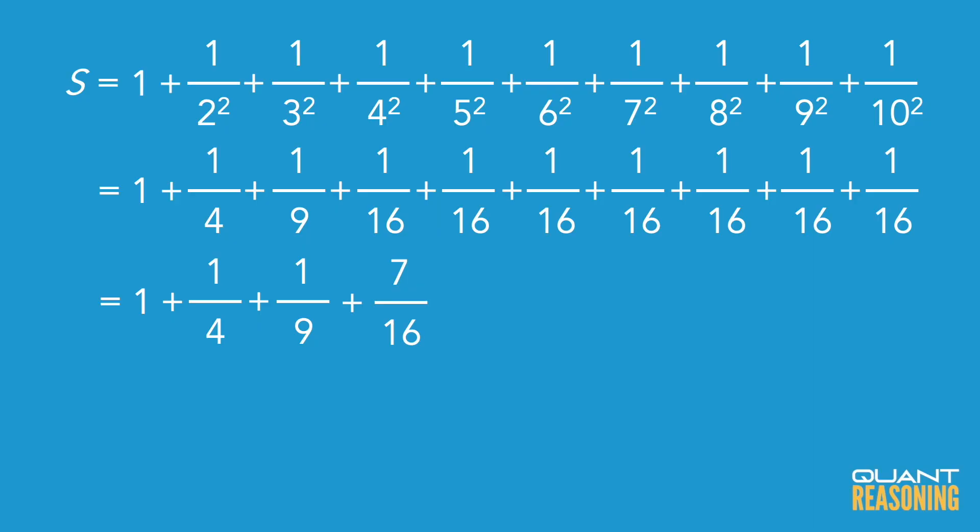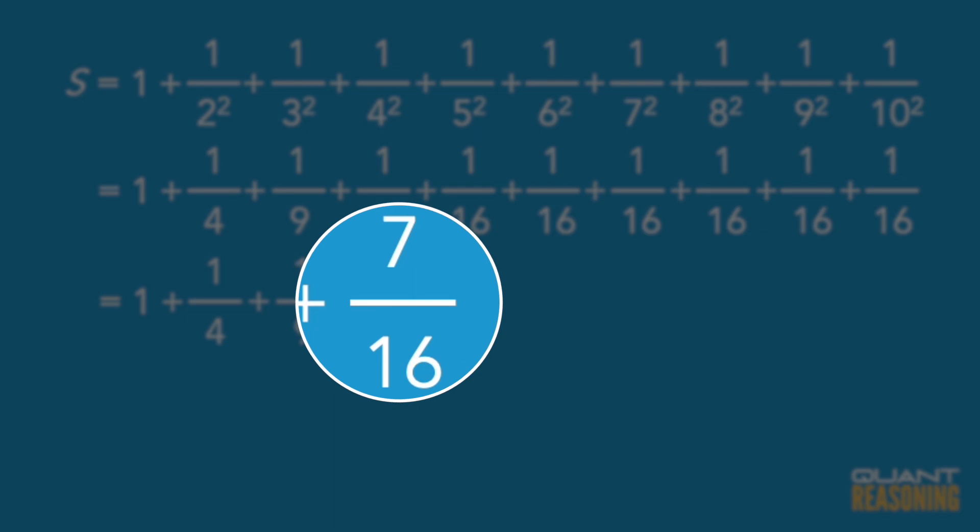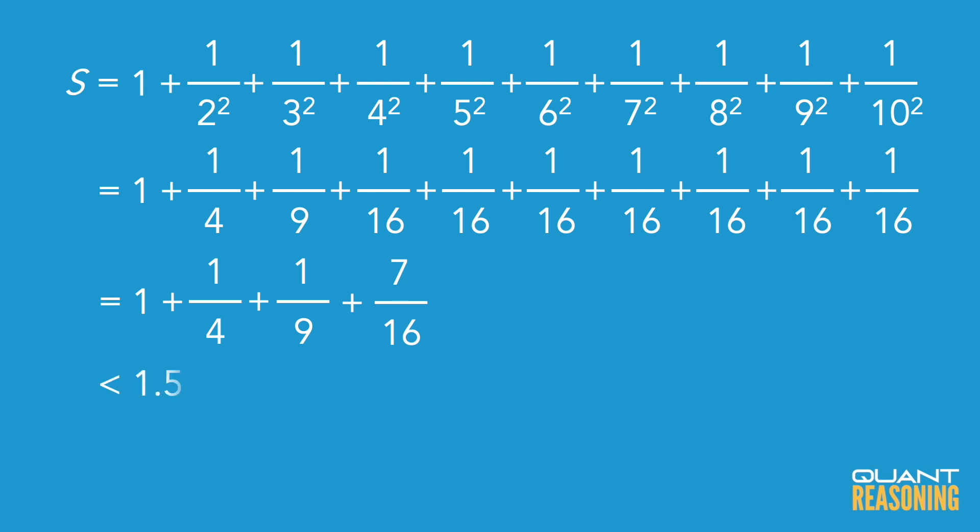So we have one plus a quarter plus one ninth — which is less than one and a half — plus something just slightly under one half, which is seven over 16. And remember, seven over 16 is actually more than the true value of those last seven terms combined. So I have something significantly less than one and a half, plus something just under one half in an extreme scenario. At that point I would feel very comfortable to pick E and move on to the next question.